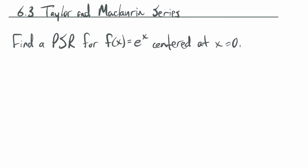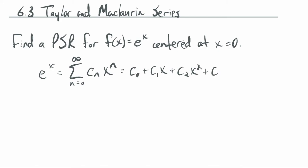So how do we do that? We're going to assume that there is a power series. Let's say that e to the x equals the sum, as n goes from 0 to infinity, of some coefficient sequence c sub n times x to the n. This would look like c0 plus c1 x plus c2 x squared plus c3 x cubed plus c4 x to the 4th, and so on.